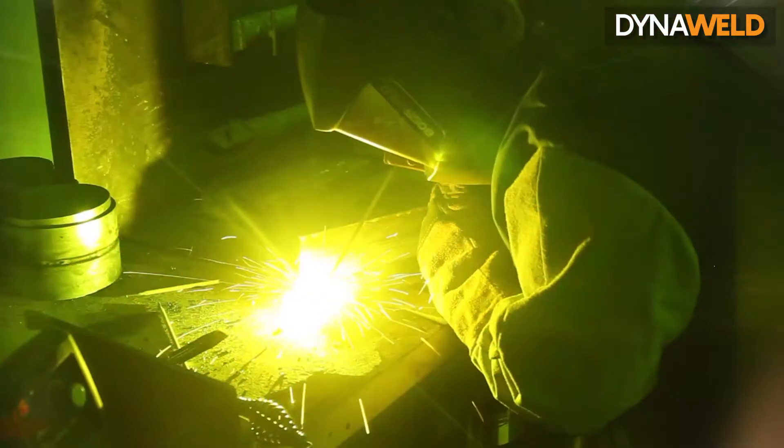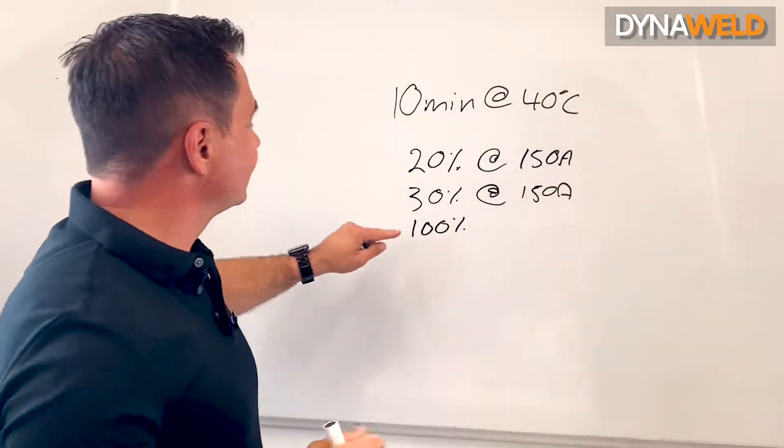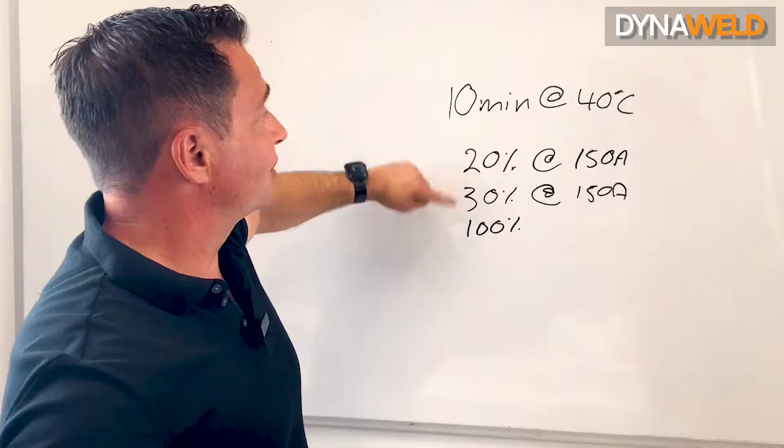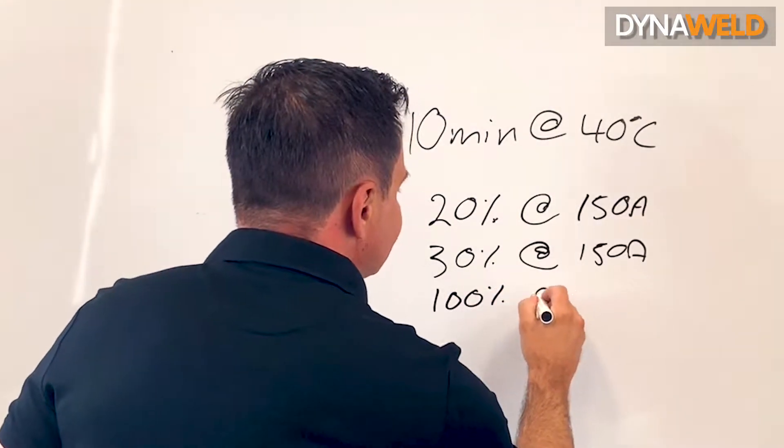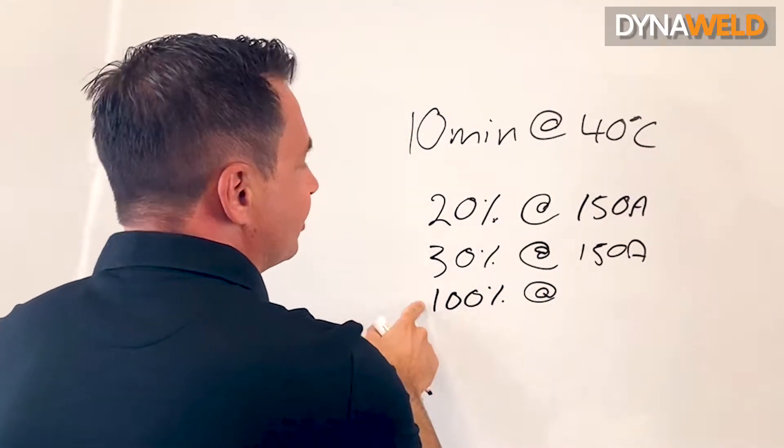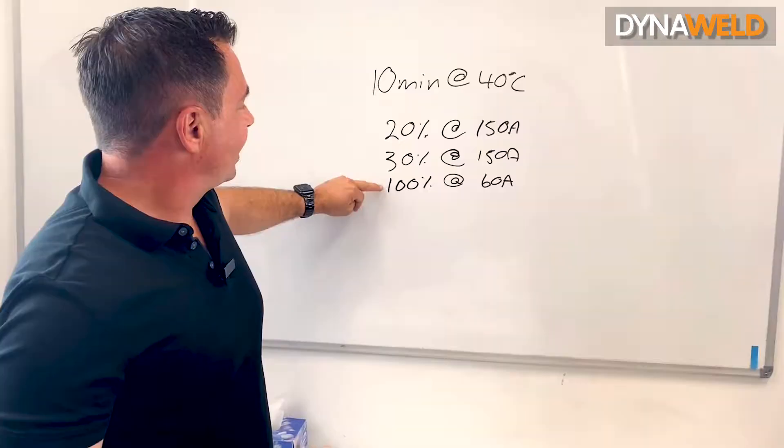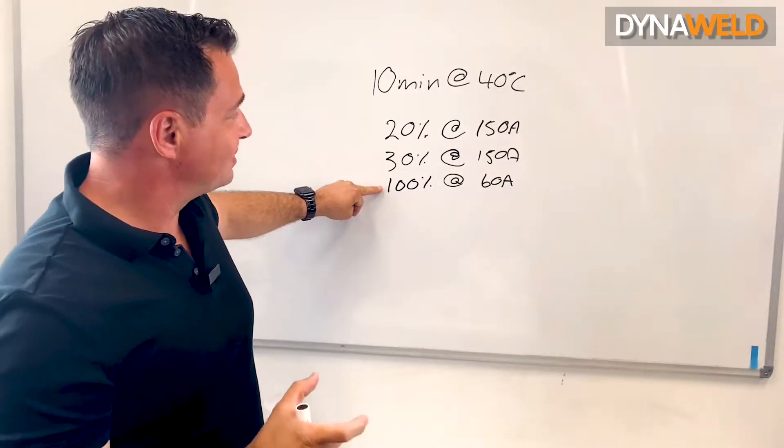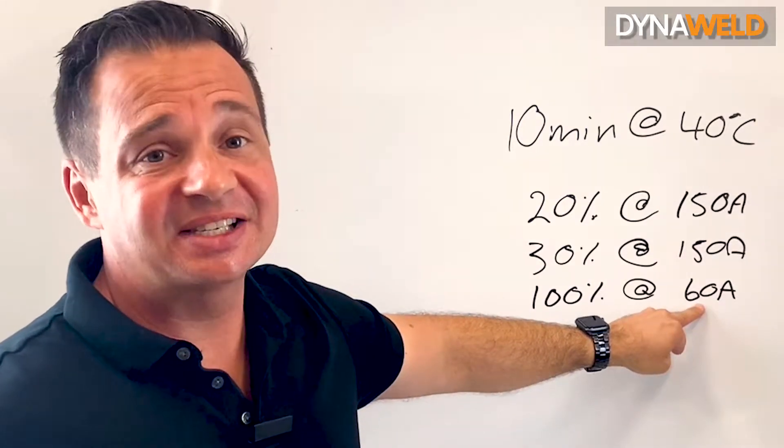Another quoted duty cycle on the specification plate is what amperage can the welder weld at for 100% of the time, for a full 10 minutes nonstop. On that same welder, it quotes 100% at might be 60 amps. For 100% of the time, which is 10 minutes, the temperature is 40 degrees, you can weld nonstop at 60 amps.